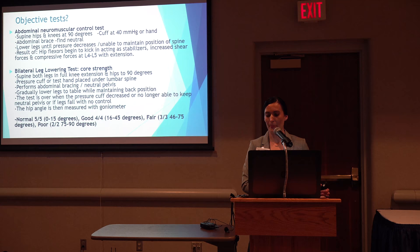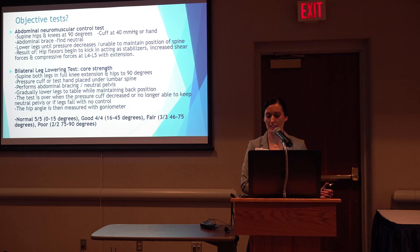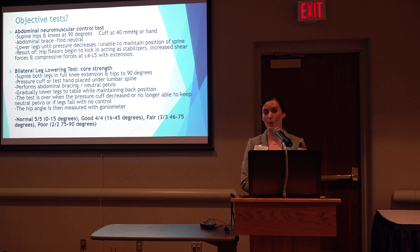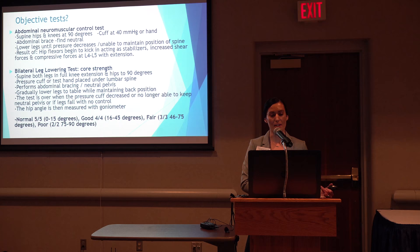Objectively documenting core strength and improvement over time is limited by normative data, creating barriers when attempting to correlate core strength to injury prevention or sport performance. There are tests that can assist, such as the abdominal neuromuscular control test and the bilateral lower leg lowering test, both placing the patient at 90 degrees of hip flexion with knees either at 90 degrees or fully extended. The patient must maintain neutral pelvis — assessed with your hand or a blood pressure cuff — then slowly lower back down, with the angle at which neutral pelvis is compromised being recorded. The bilateral lower leg lowering test has set categories of normal, good, fair, or poor, which can be used when writing goals.